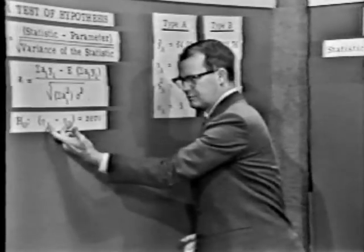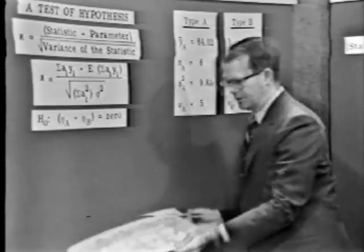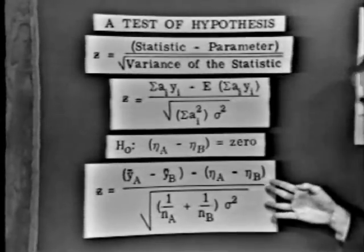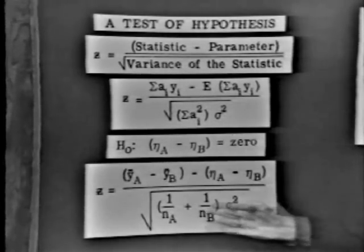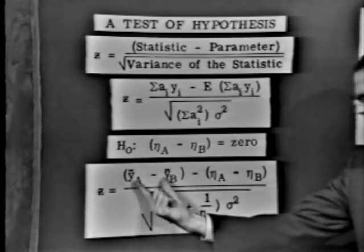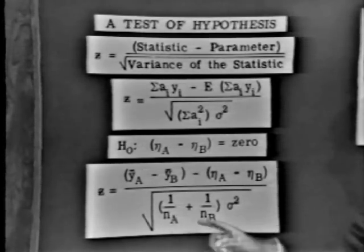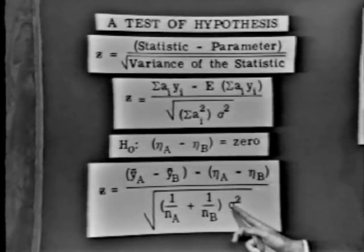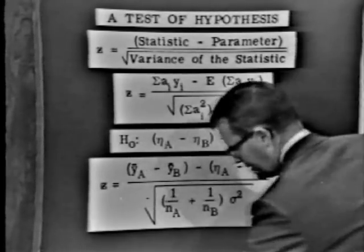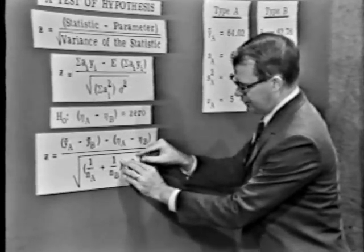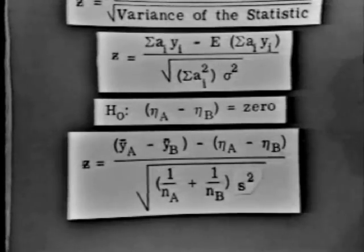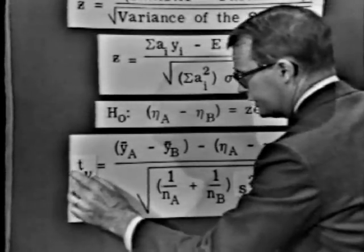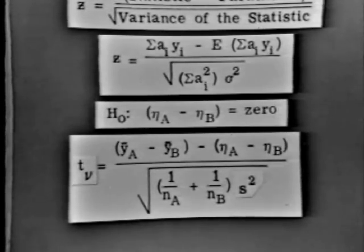Fortunately, that parameter is estimable by a linear statistic. Substituting into the equation for the normal deviant, we know the hypothesized value, we know N_A and N_B, the number of observations. But what about sigma squared? Alas, we don't know sigma squared. So quickly we'd replace sigma squared by s squared. The moment we do that, the normal deviant transfers itself into the Student's t deviant with nu degrees of freedom.